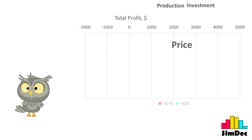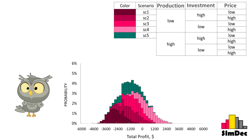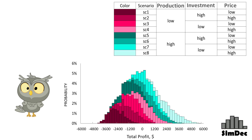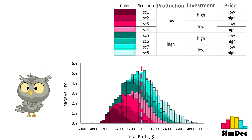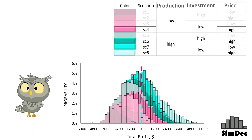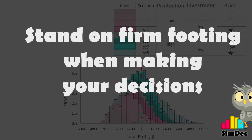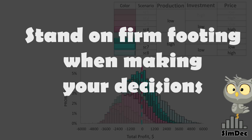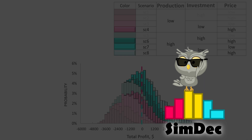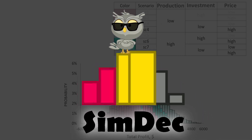Seamdeck can show you all combinations of all these factors changing simultaneously. You will be able to see which scenarios of multiple factors lead you to the desired outcome, and if there is any important interaction going on in your model. Stand on firm footing when making your decisions. Seamdeck – Analyzing uncertainty. Easy.